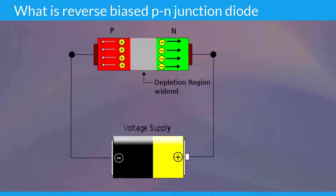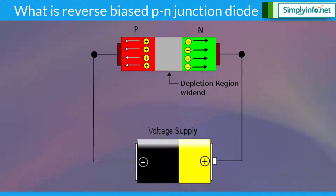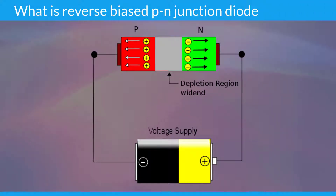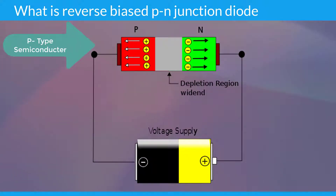The wide depletion region of the PN junction diode completely blocks the majority charge carriers. Hence, majority charge carriers cannot carry the electric current. However, the PN junction diode allows the minority charge carriers. The positive terminal of the battery pushes the holes, that is minority carriers, towards the P type semiconductor.